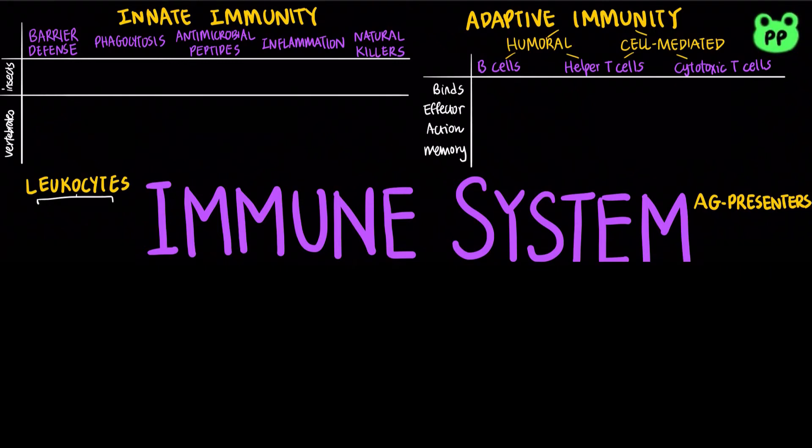The immune system recognizes foreign bodies and responds with the production of immune cells and proteins. There are two major kinds of defense: innate immunity and acquired immunity. Innate immunity provides fast and non-specific responses to pathogens.